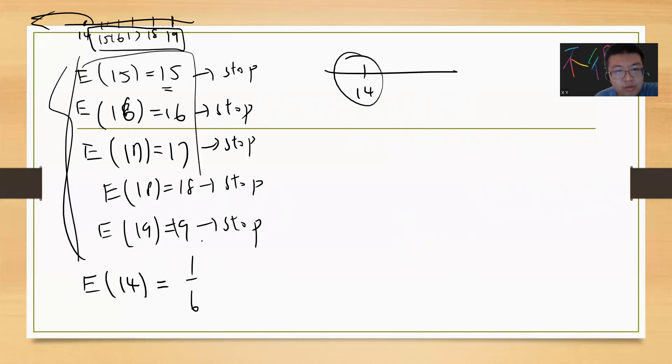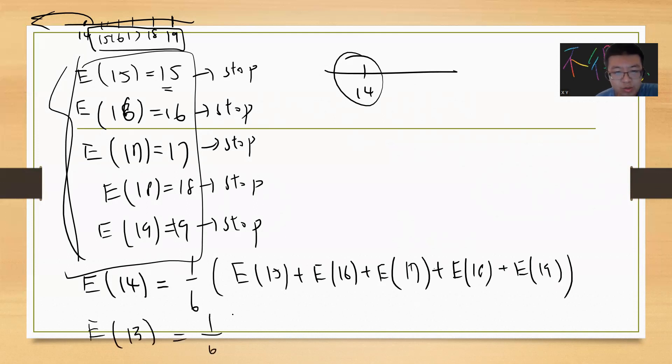So it's 1/6(15 + 16 + 17 + 18 + 19). Then you can solve the expectation of 13. It's also 1/6 and you get E(14) + E(15) + E(16) + E(17) + E(18).